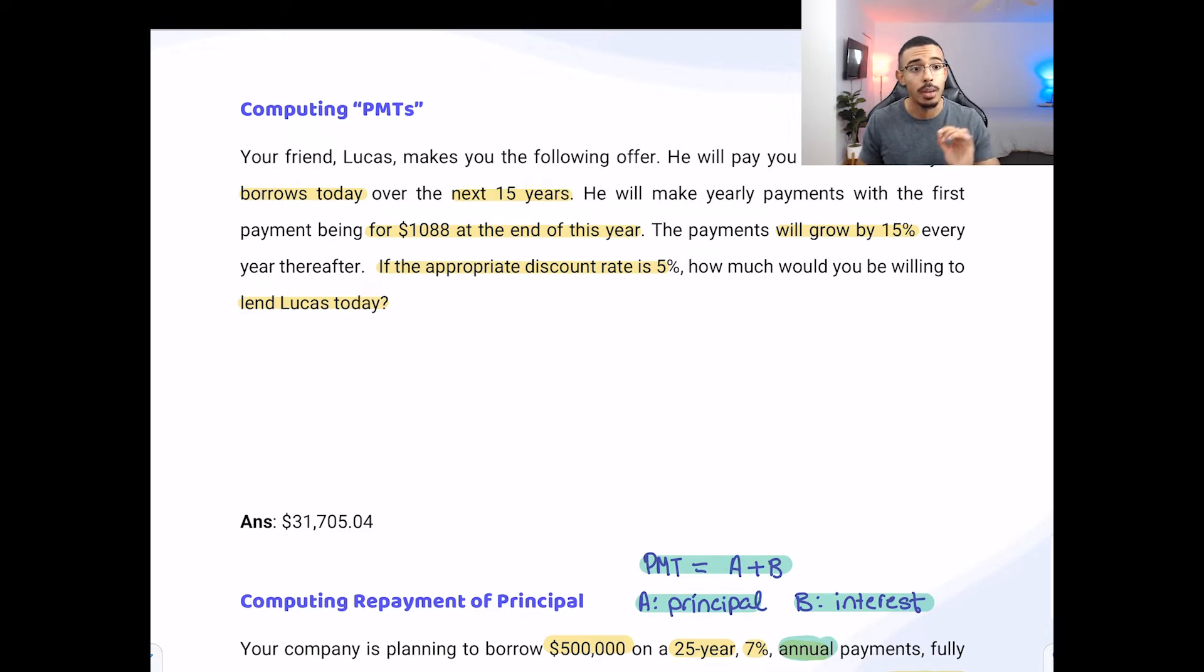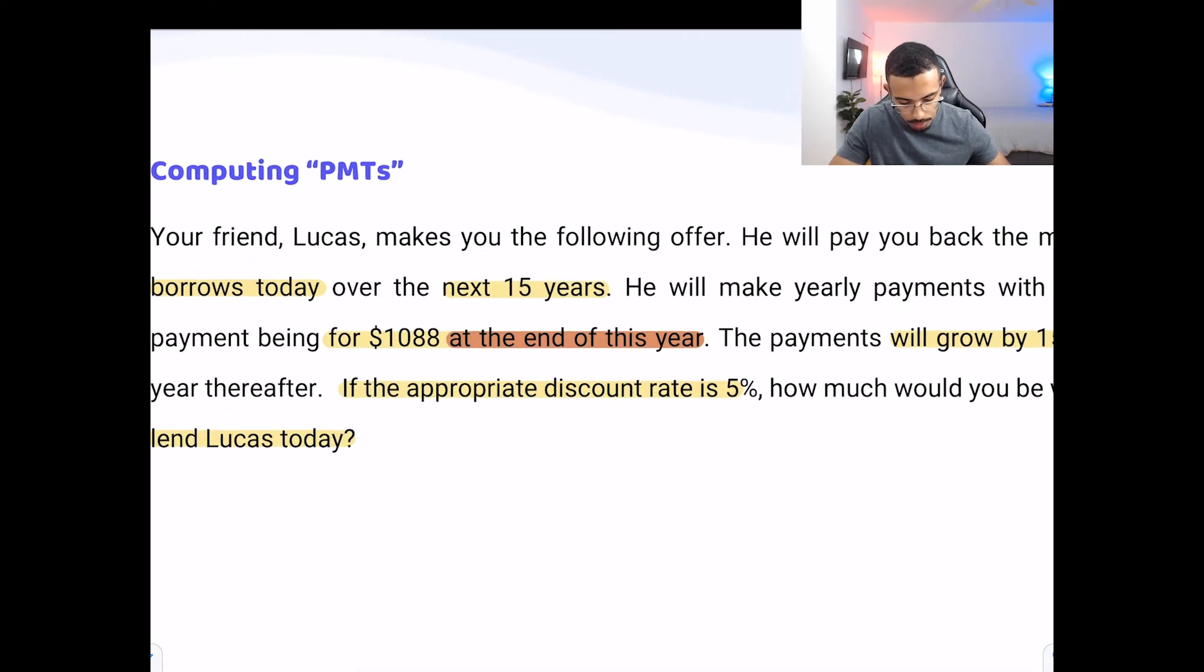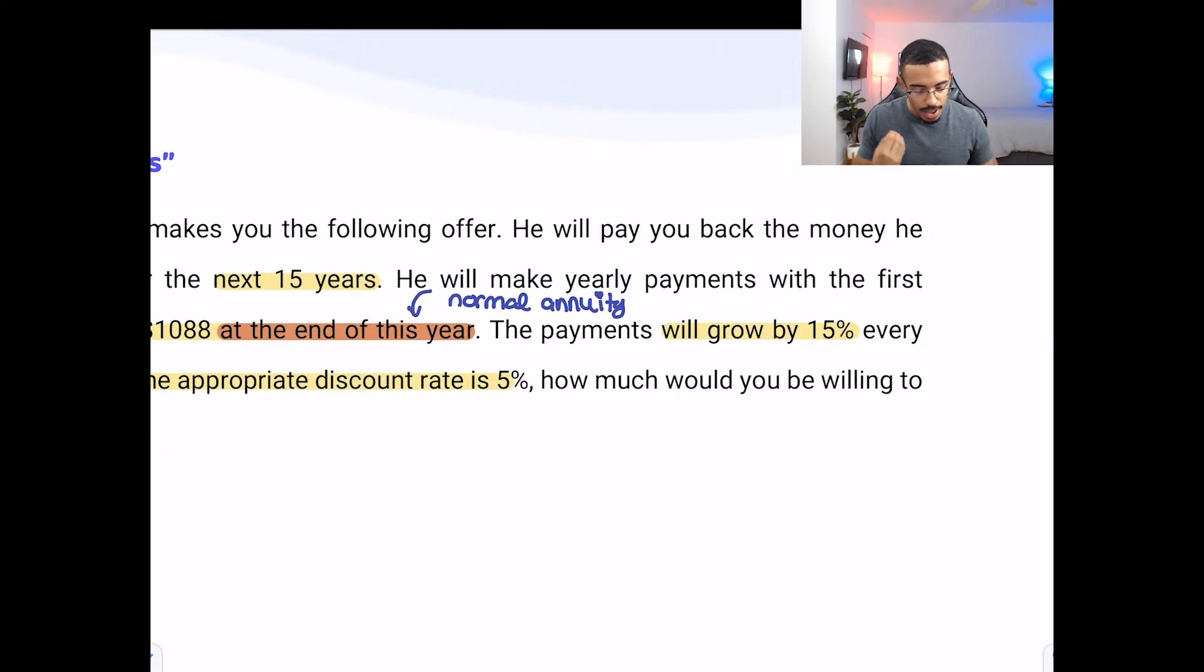Within this question, we have some really important information. It's this idea of something happening at the end of this year. At the end of this year, it really means we're dealing with a normal annuity. A normal annuity will always have the keyword that we have at the end of this year.